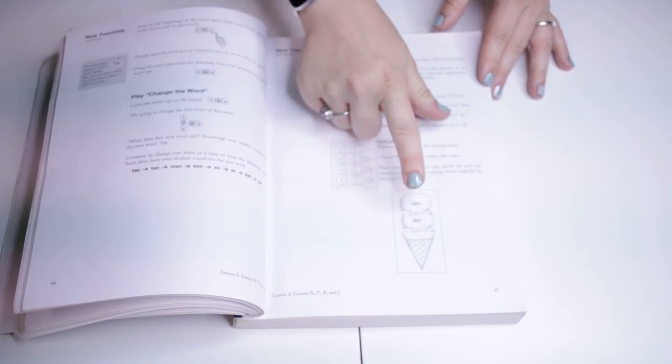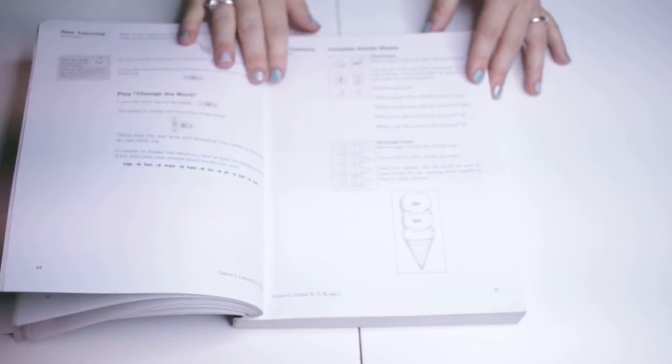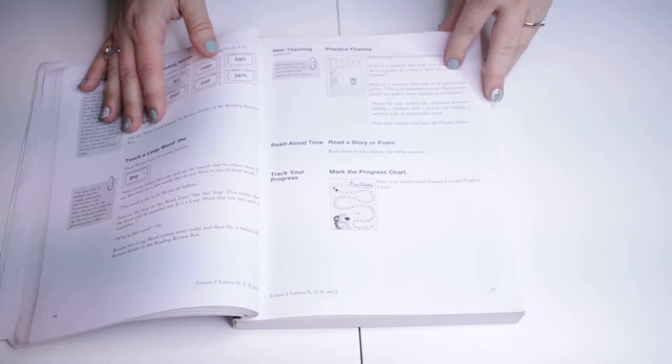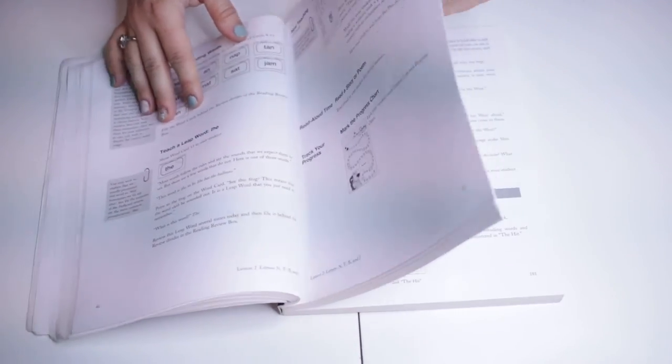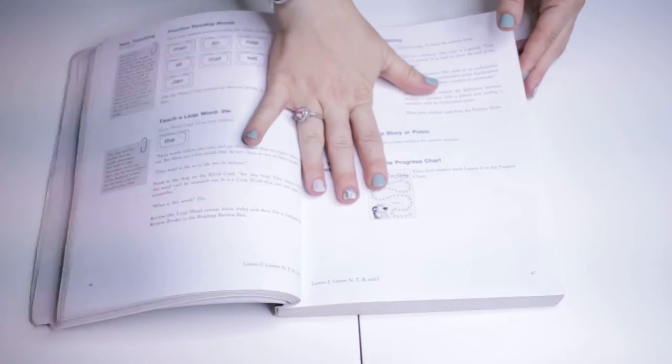And then lastly it will take you over to the worksheets included in the student workbook and you would do those pages. And that's how it continues throughout this book. And then of course here there's no reading just yet because it was the beginning and they don't know enough to read yet.